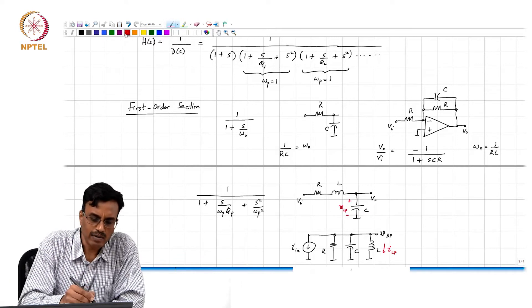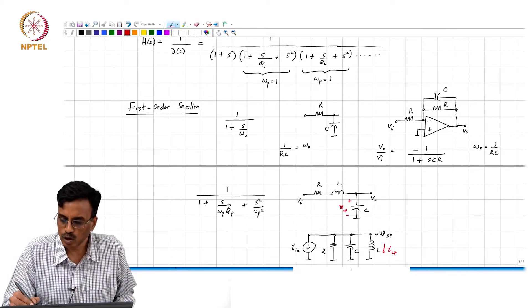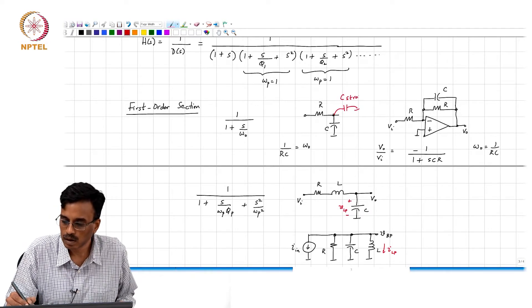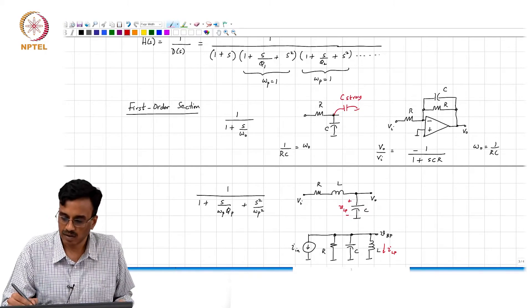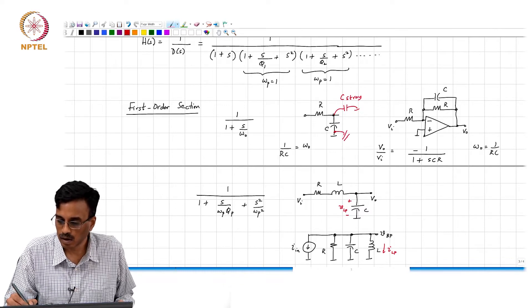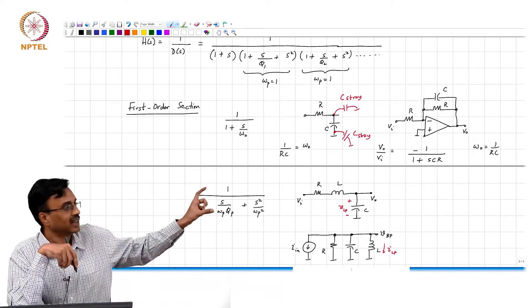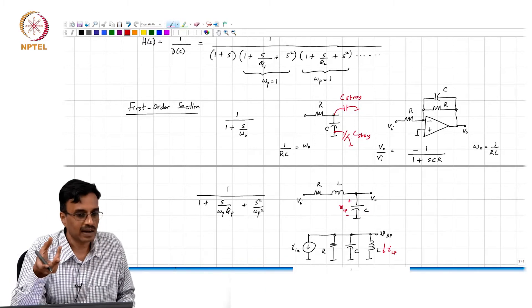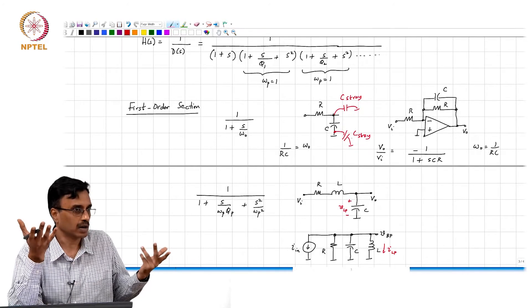It so turns out that whenever you have a capacitor, every capacitor will have some stray capacitance at every plate. The two stray capacitances need not be the same. They are there whether you make an integrated circuit or whether you make it on a discrete circuit. There is nothing you can do about it.